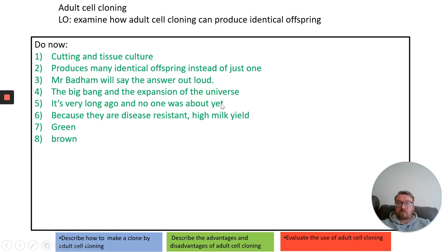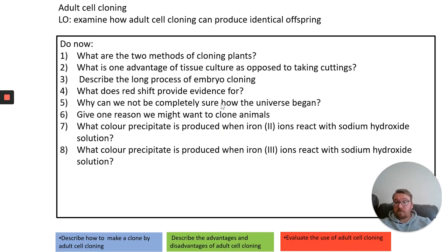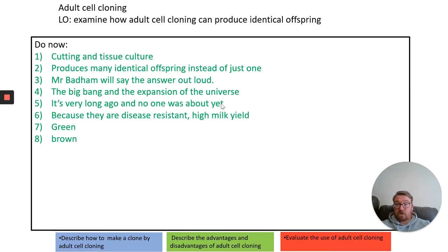Two methods of cloning plants: cuttings and tissue culture. Number two — you produce many identical offspring in tissue culture as opposed to cuttings. Number three is a reminder of the long process of embryo cloning or embryo transfer.